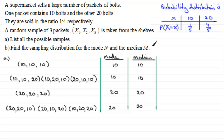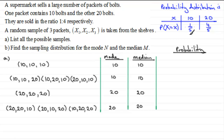Now let's work out some probabilities. For getting a mode or median of 10 from the all-10s sample, we need P(10) × P(10) × P(10), which is one fifth cubed, giving 1/125.